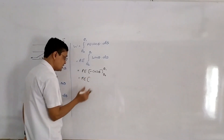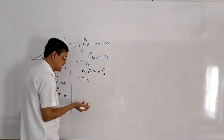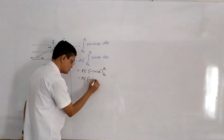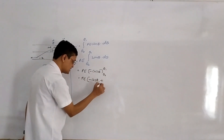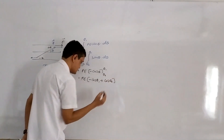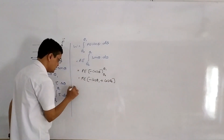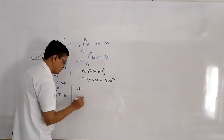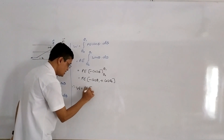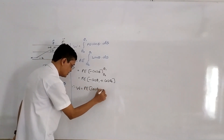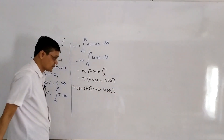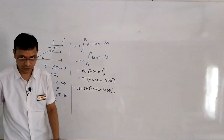Applying limits: PE times [minus cos theta₁ minus (minus cos theta₀)], which gives work equal to PE (cos theta₀ minus cos theta₁). This is the formula for work done.